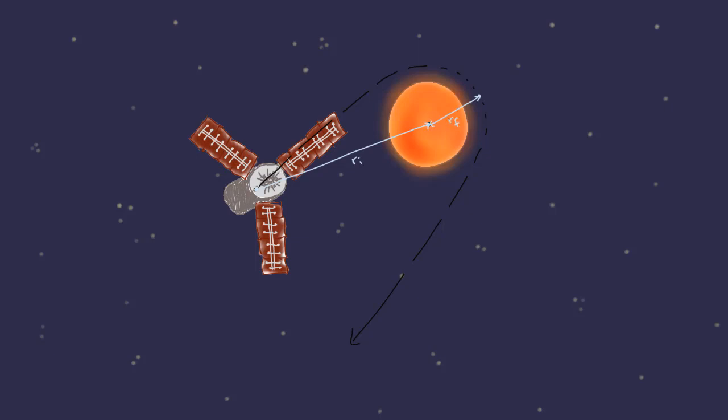How much work is done by the field from where the probe starts to its closest point? We could try to figure this out by calculating the force on the probe at every point and looking for the component in the direction of motion. This would be really hard because we'd have to cut up the path into a bunch of small segments that are roughly straight and get the angle between the force and the motion and the strength of the force for the entire path.